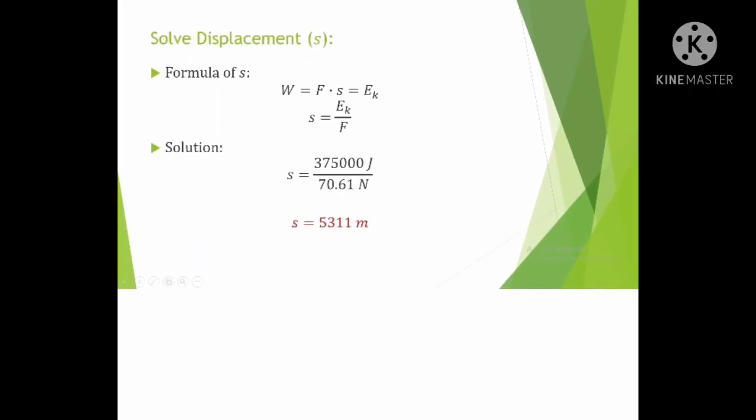Now that we solved kinetic energy and force, now we can solve the displacement. The formula of displacement is s equals kinetic energy over force. Displacement equals 375,000 joules, which is the kinetic energy, over 70.61 newtons, which is the force. Then the displacement equals 5,311 meters.